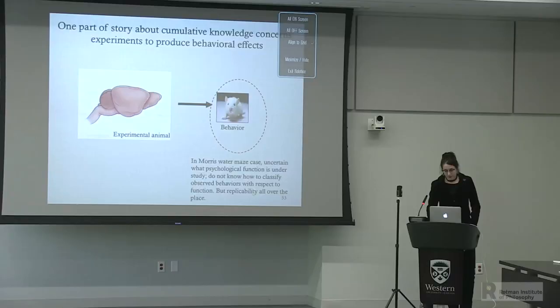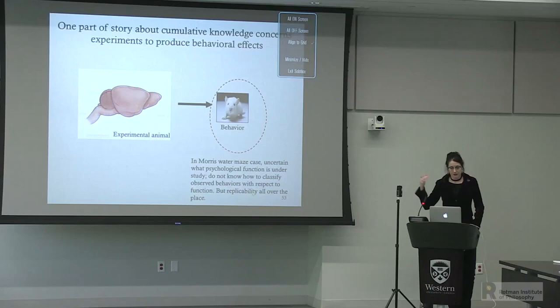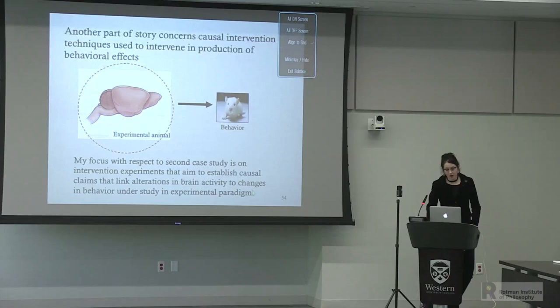For the second case study, looking at the Morris water maze represents one part of the story about how cumulative knowledge occurs in neuroscience—in that case, we're uncertain what psychological function is under study and we don't know how to classify the observed behaviors, but we have replicability. In this next case study, I want to consider the causal intervention side of things more explicitly, focusing on intervention experiments that aim to establish causal claims linking alterations in brain activity to changes in behavior under study in an experimental paradigm.